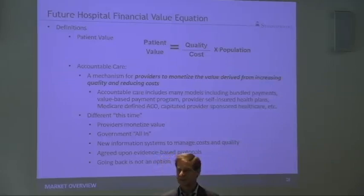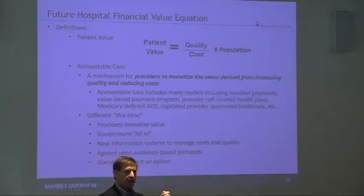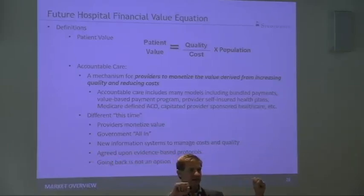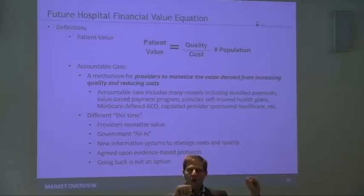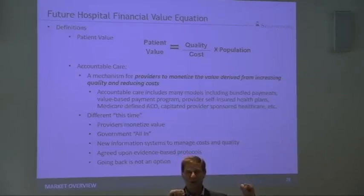Here's why I would suggest it failed miserably. Back in the day, who monetized the value of increasing quality, reducing cost? Insurance companies or provider organizations? Insurance companies did. Who has the greatest ability to affect quality and cost? Insurance companies can do nothing other than negotiate.